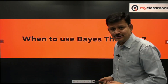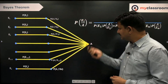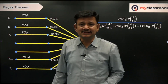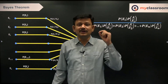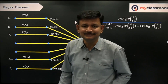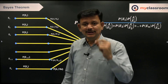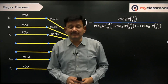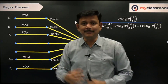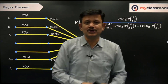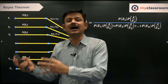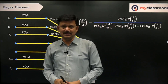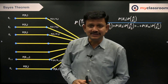So without any ado, let us see what is Bayes' Theorem and when to apply it. When to apply Bayes' Theorem? Whenever you know the final outcome — whenever you know that a final outcome is given to you — an event has happened and you are doing a postmortem of it, you are identifying why it would have happened. That is when you use Bayes' Theorem.